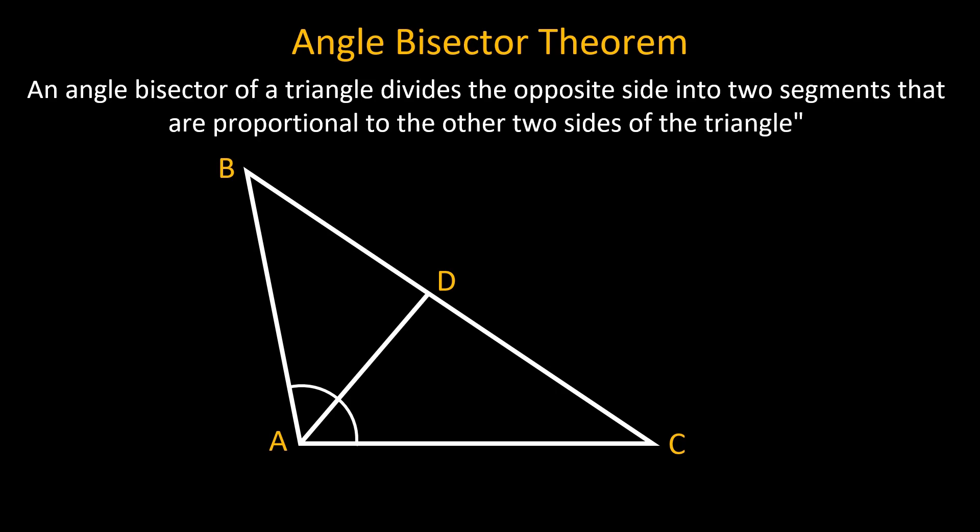In the given figure, segment AD is the angle bisector of angle A. By applying the angle bisector theorem, we can say that AB over AC is equal to BD over DC.